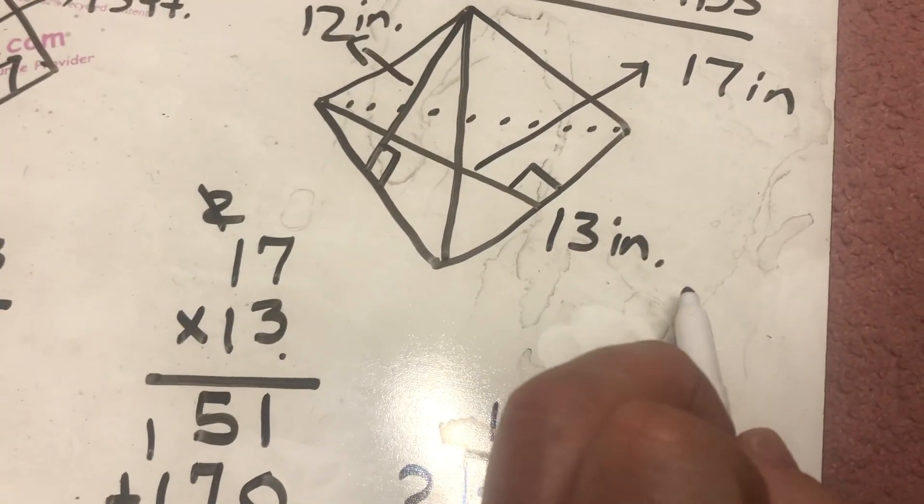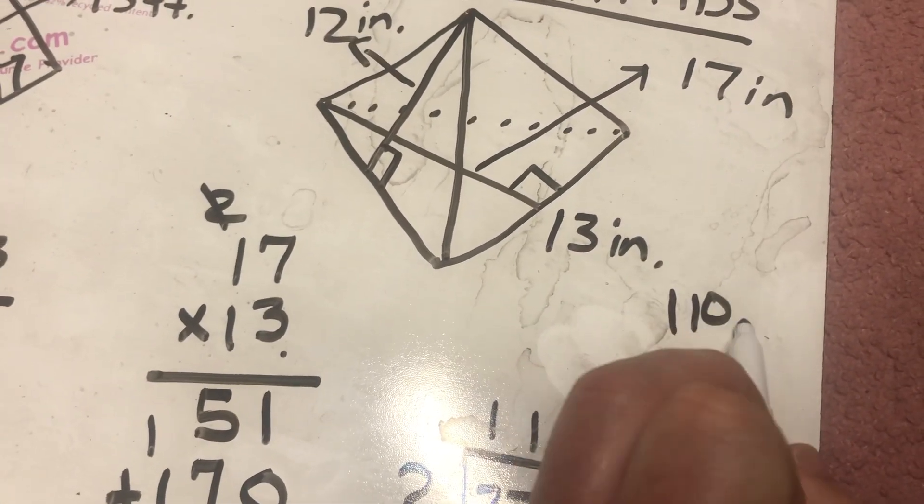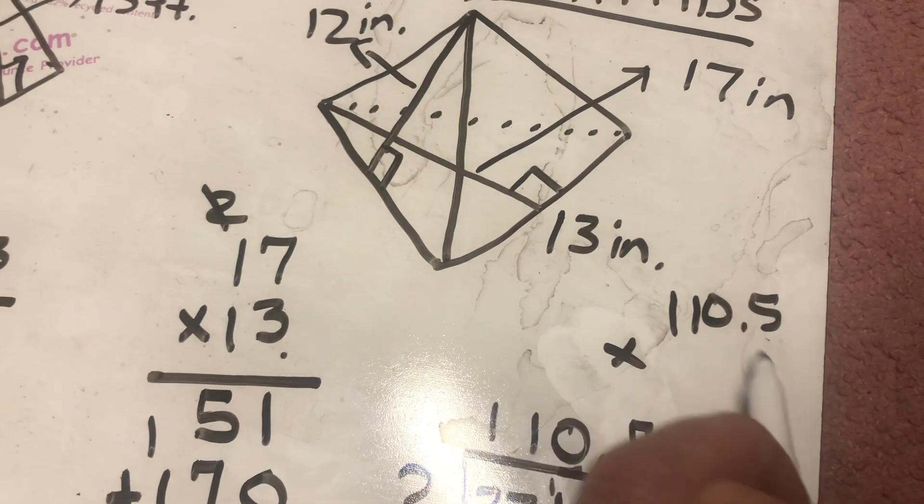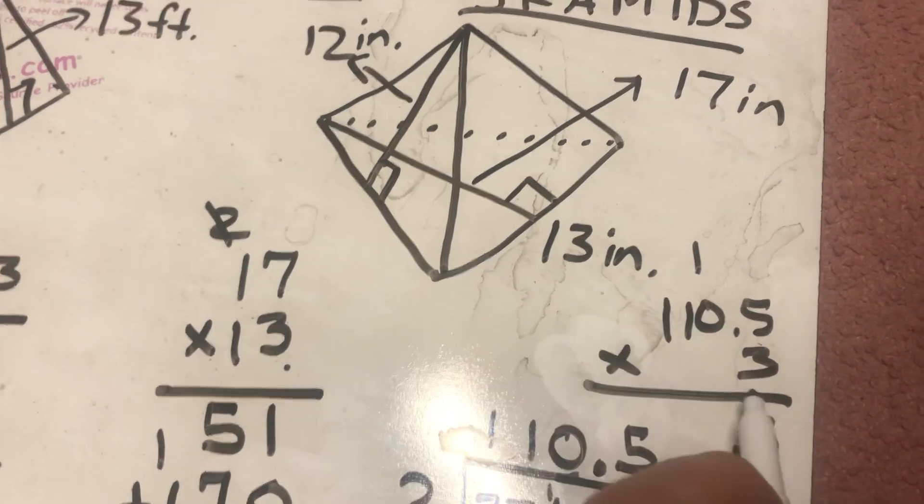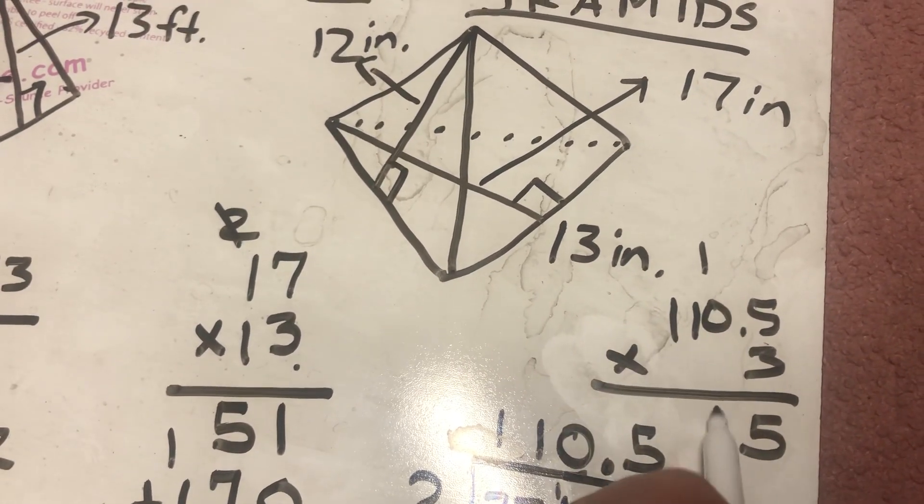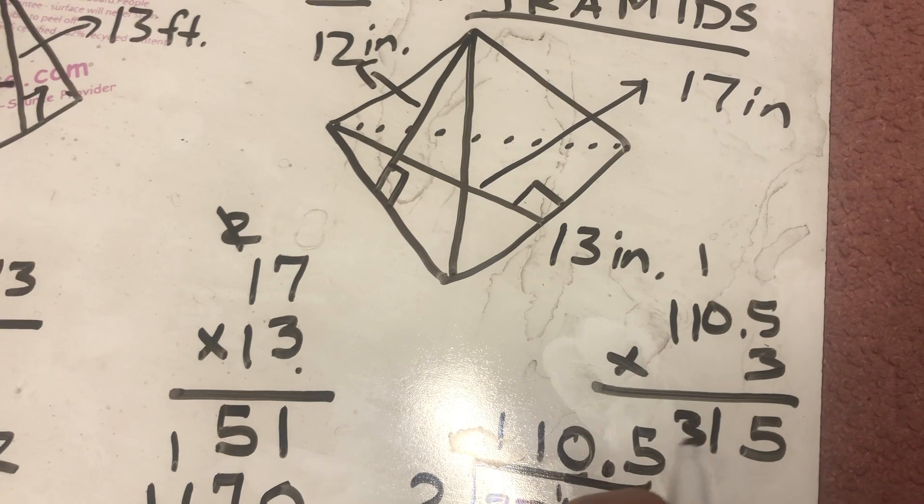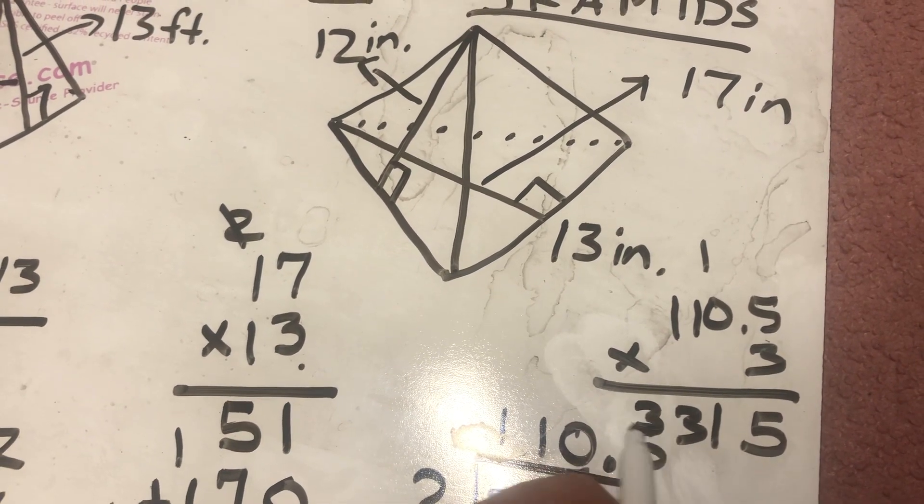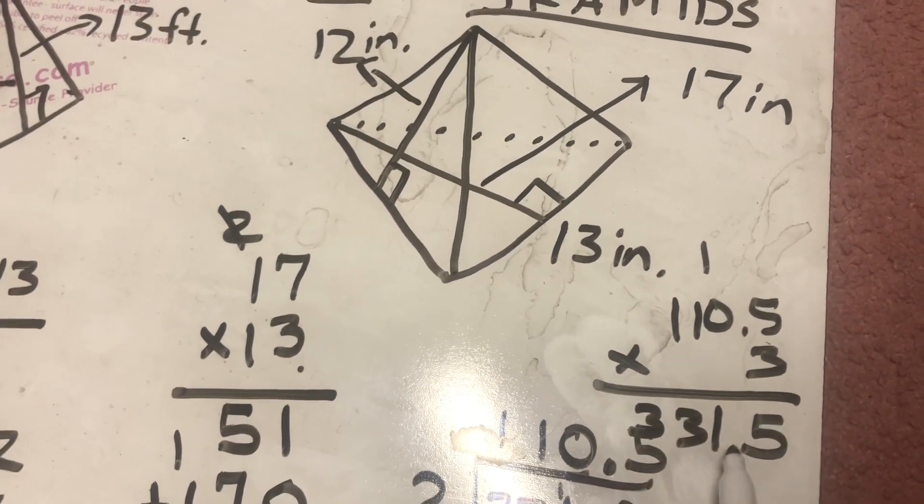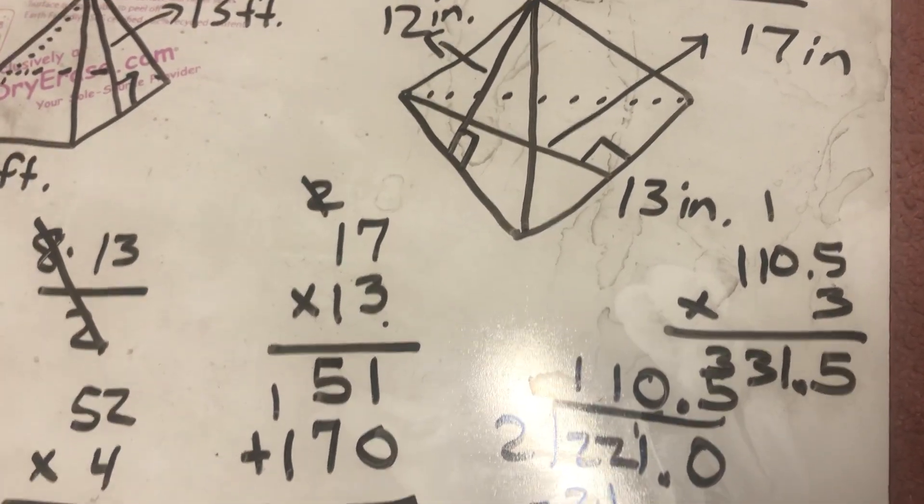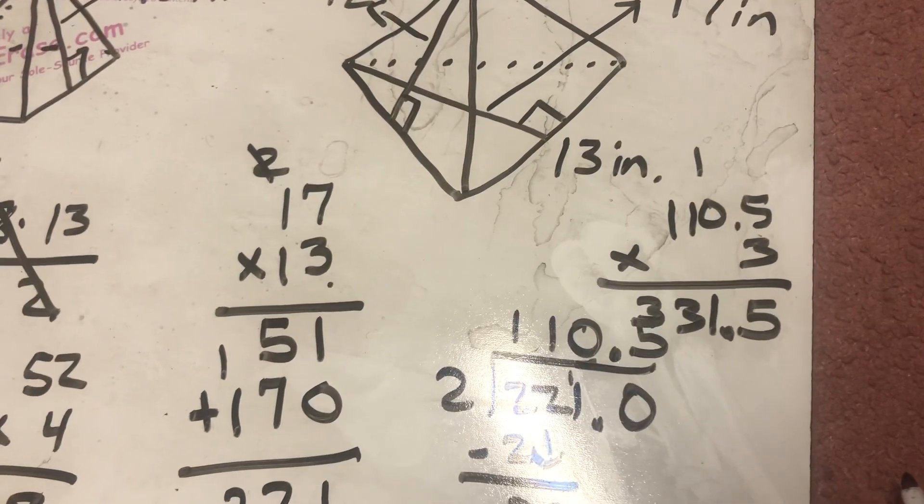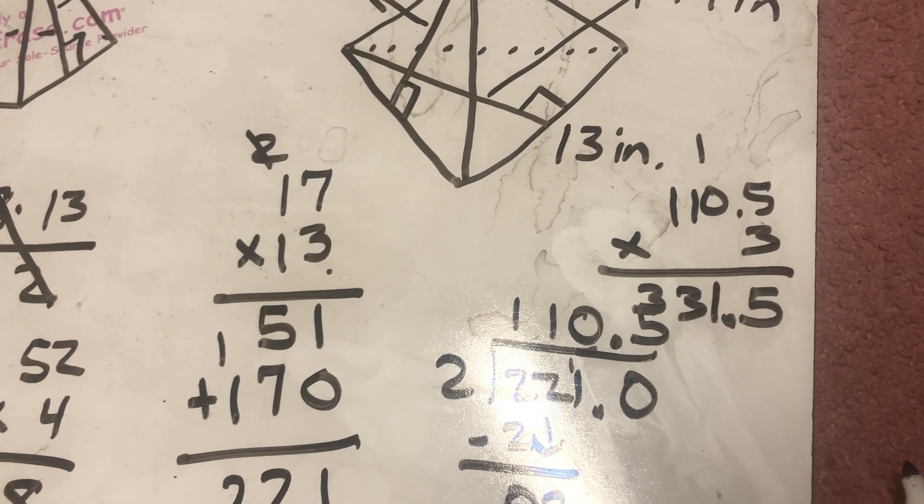So, I'm going to come up here. The 110.5 times 3. 3 times 5 is 15. Put the 5 down. Carry the 1. 3 times 0 is 0. Plus 1 is 1. 3 times 1 is 3. 3 times 1 is 3. There's 1 digit that comes after the decimal. And the problem, 1 digit that comes after the decimal. And the answer, 331.5.